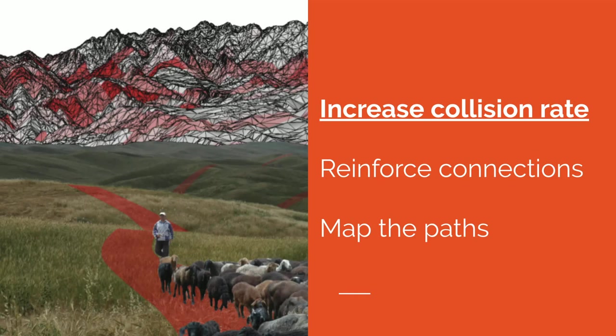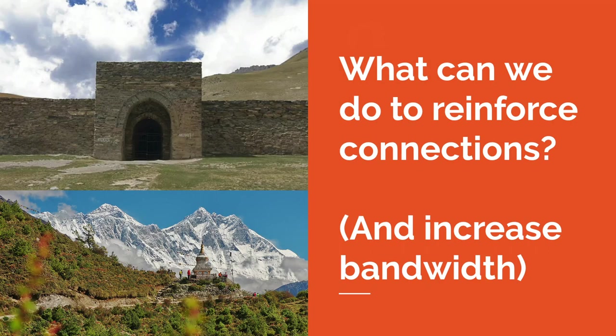So we've talked about how to increase collision rate and make people interact more to form a denser network. But this creates a lot of loose connections. How do you make these connections between people last and turn into paths of collaboration about things like infrastructure, safety, and security?